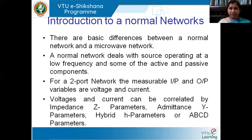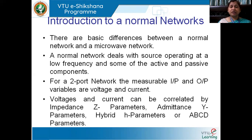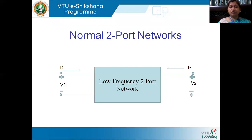This network can be denoted as a two-port network, where we have one input port and one output port. Usually in such networks, we deal with voltage and current at the input and output ports. While finding out the relationship between input port parameters and output port parameters, we use certain parameters such as Z parameter, Y parameter, H parameter, and ABCD parameters.